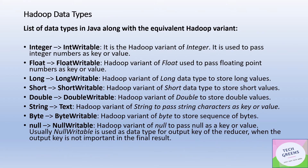Here is the list of Java data types and their equivalents in the Hadoop world: Integer becomes IntWritable, Float becomes FloatWritable, Long becomes LongWritable, Short becomes ShortWritable, String becomes Text, Byte becomes ByteWritable, and null becomes NullWritable. NullWritable is typically used as the output key of the reducer when the output key is not important in the final result.